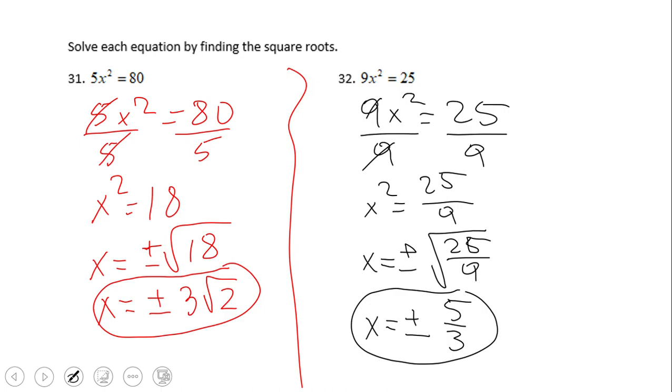If you end up with these two solutions, positive five-thirds and negative five-thirds, you did a wonderful job.